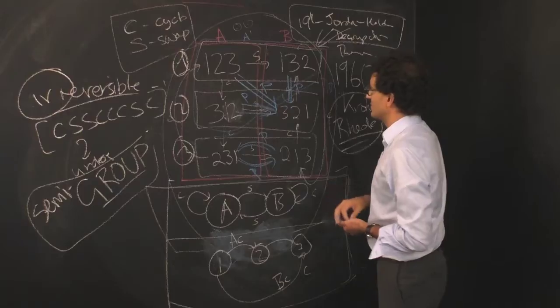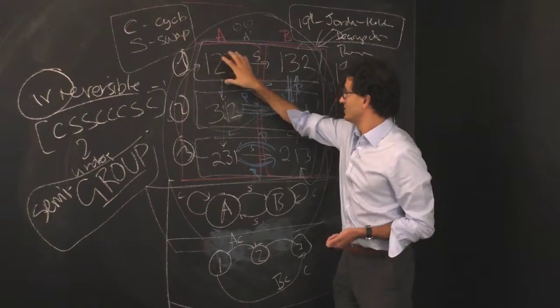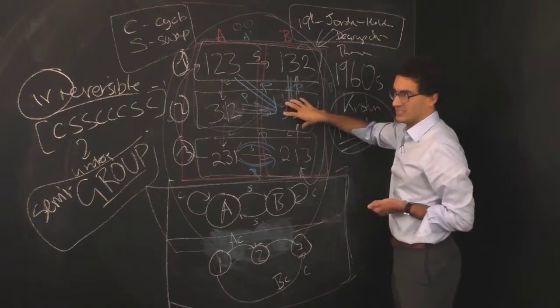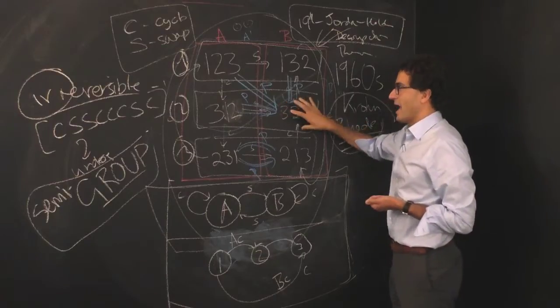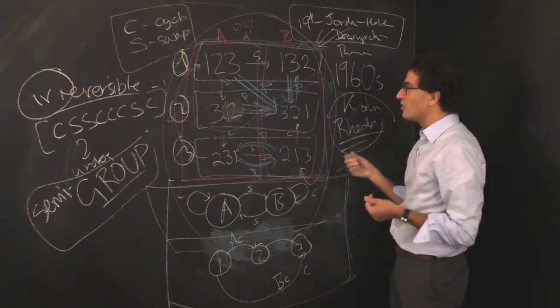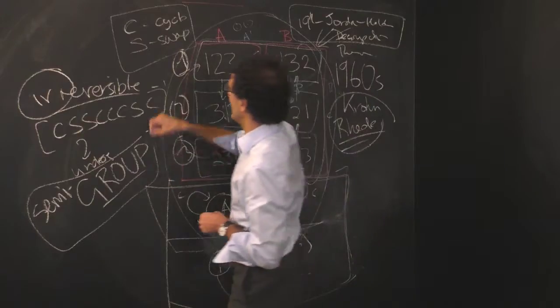here it sort of swaps these two, right? But the poke operation here actually takes each of these three things and funnels them into a single state. And in this case here, the poke operation is no longer reversible in contrast to the cycle and swap.